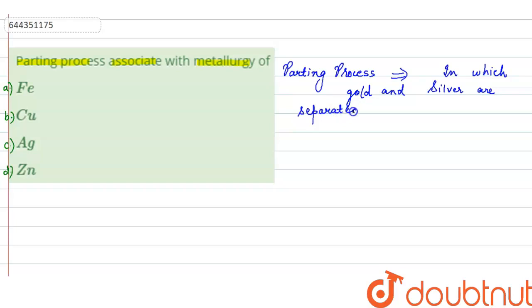by chemical or electrochemical means. Now, there is a need of parting process because sometimes gold and silver are extracted from the same ores or during the extraction of other metals,